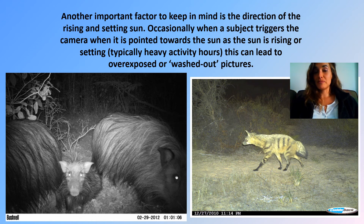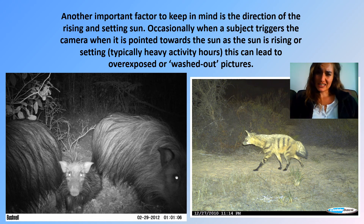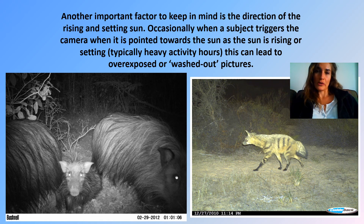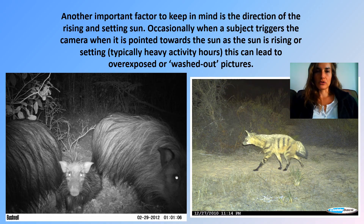Another important factor is the direction of the sun — where is it rising or setting? Occasionally when a subject triggers the camera while it's pointed towards the sun as it rises or sets, this can wash out your picture completely. You'll just get a whitewashed photo and won't know what triggered the camera. Just be aware of where the sun is moving during the day when placing your camera trap.